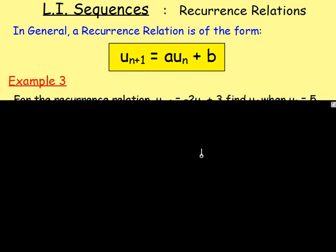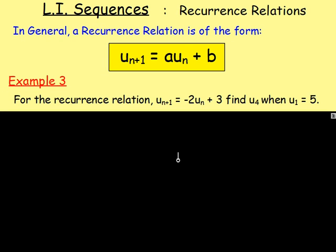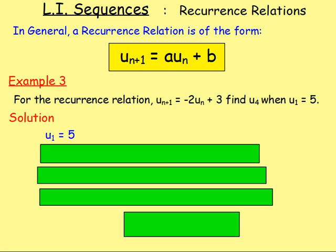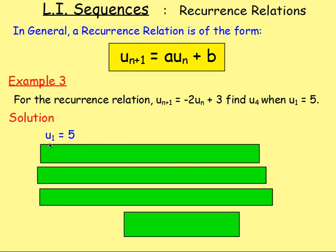Let's try another couple of examples similar to that. So with this one, example 3. For the recurrence relation, UN plus 1 equals negative 2UN plus 3. Find U4 when U1 equals 5. So again, as I said, sometimes you'll be given U0, sometimes it's U1. It doesn't really matter. You just find the next term. So after U1 will be U2, and you would just use your recurrence relation to find that. So, similar method. We're told to start with U1 equals 5, so the term after that is obviously U2.